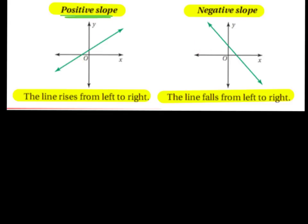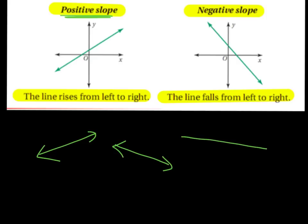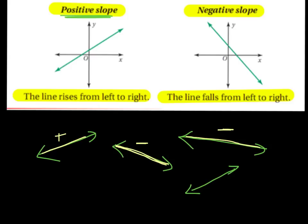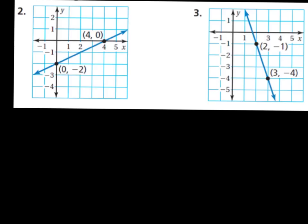If we look at this one, as I go from left to right the line is going down, so this one has a negative slope. I'm going to draw a couple of lines and I want you to figure out what kind of slope each of these four lines has. This line here has a positive slope — going up from left to right. This line has a negative slope — going down. This line also has a negative slope, and this one has a positive slope.